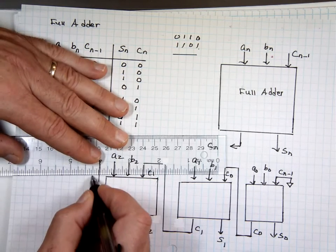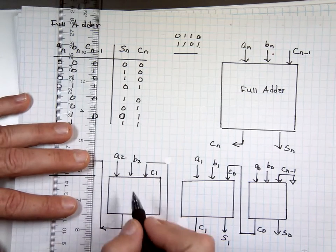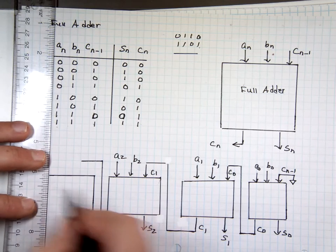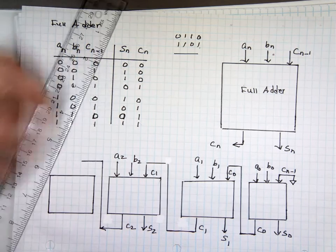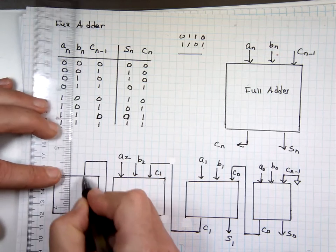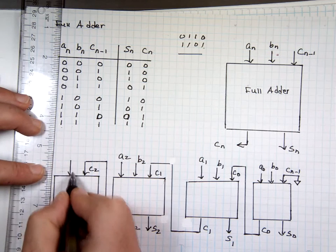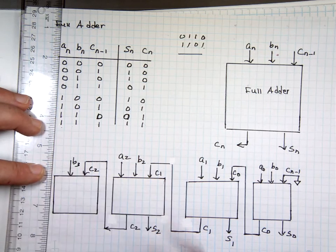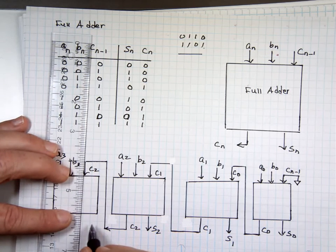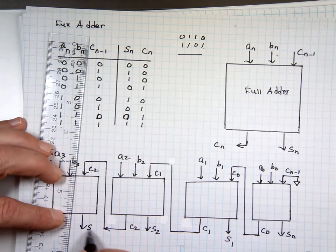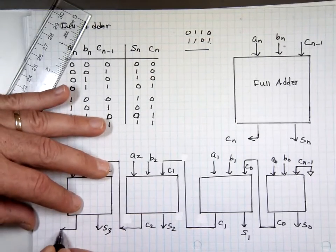And the last one now. So this is C2, B3, and A3. And you have your third sum, which is actually the fourth one. And now you have the carry. And this carry will go out, C3.